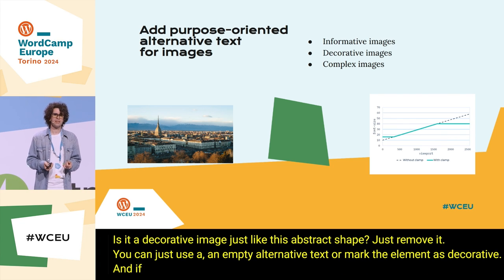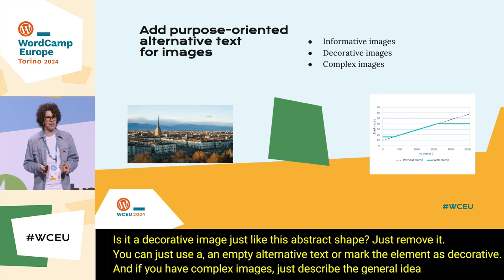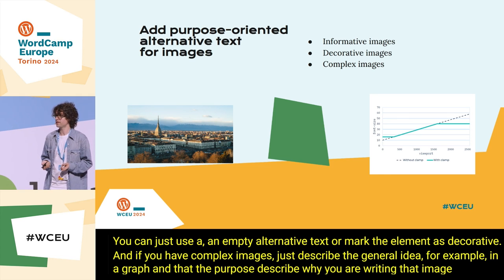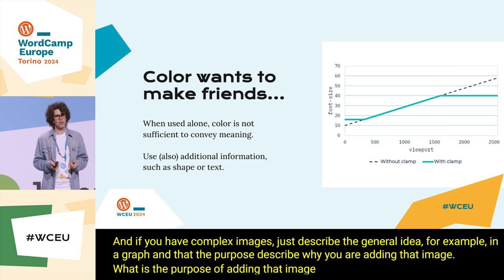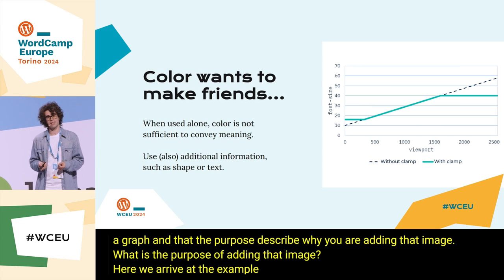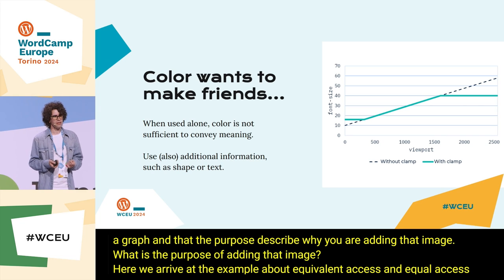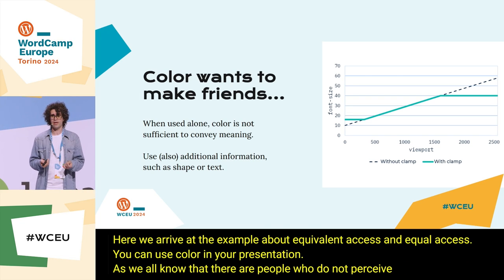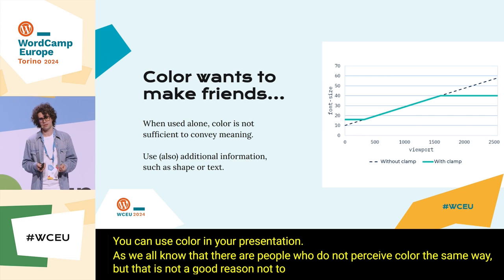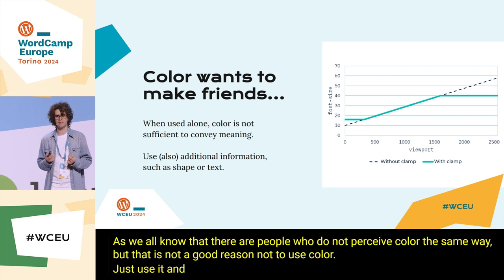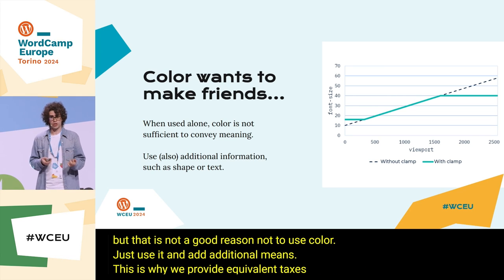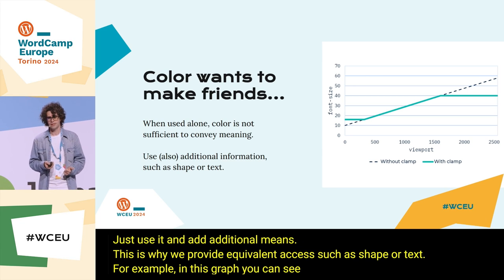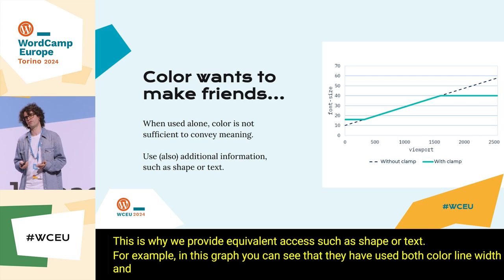For complex images, describe the general idea — for example, in a graph — and add the purpose: describe why you are adding that image. This brings us to the example about equivalent versus equal access. You can use color in your presentations. We all know there are people who do not perceive color the same way, but that is not a reason not to use color. Just use it and add additional means such as shape or text. For example, in this graph, I've used color, line width, and a pattern to differentiate the two lines.